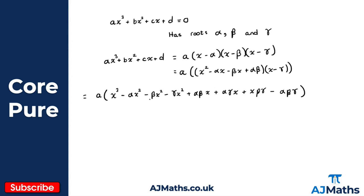What I want to do here is start factorizing — I've got minus alpha x squared, minus beta x squared, minus gamma x squared. So I'm going to factor out x squared and write this as a times x cubed, minus alpha plus beta plus gamma, lots of x squared. That's a good habit to get into when you're doing questions like this.